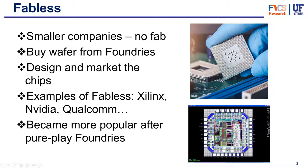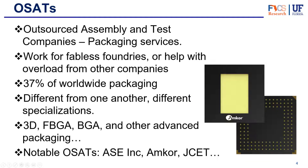So what happens with the packaging? Sometimes foundries can do a little bit of packaging, but not all of it. What usually happens is they outsource the packaging to the OSATs — Outsourced Assembly and Test Companies. They just offer packaging services, working for fabless foundries, but sometimes also helping with overload from other companies. There are companies that do the entire process from top to bottom — manufacturing and packaging — but if they have too much on their hands, they will outsource the packaging to these OSAT companies.